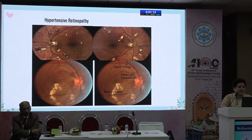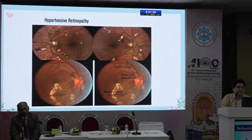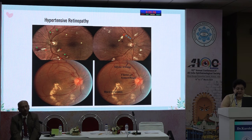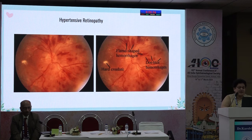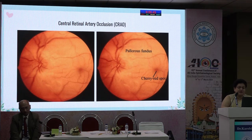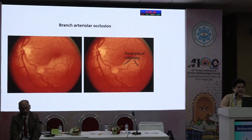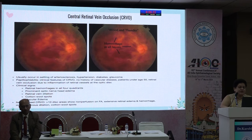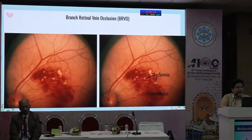In hypertensive retinopathy, you see a conglomerate of soft exudates and flame-shaped haemorrhages; if exudates reach the macula, it indicates malignant hypertension. The disc may also be involved with haemorrhages. Central retinal artery occlusion shows the cherry red spot with a surrounding white area. In branch arteriolar occlusion, the infarction is along a segment and the rest of the retina looks normal. In CRVO you have superficial haemorrhages overriding the macula, and in branch vein occlusion, haemorrhages affect a branch of the vein.